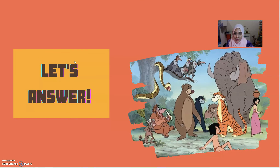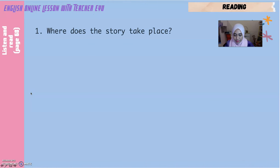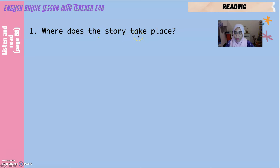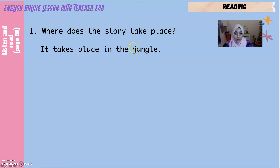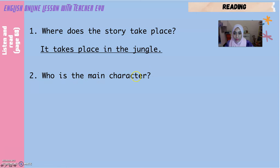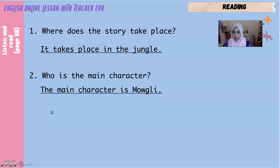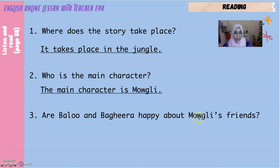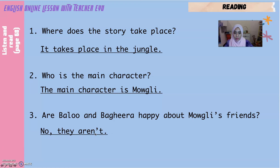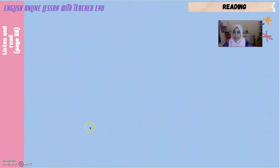Now let's answer some questions. Question number one: where does the story take place? It takes place in the jungle — cerita ni berlaku di dalam hutan. Number two: who is the main character? The main character is Mowgli. Question number three: are Baloo and Bagheera happy about Mowgli's friends? No, they aren't — mereka tidak suka, mereka tidak gembira.